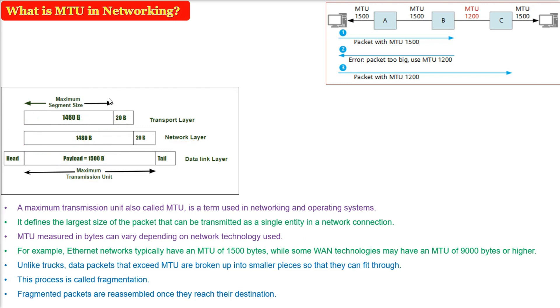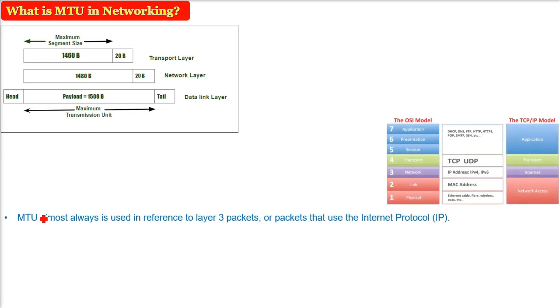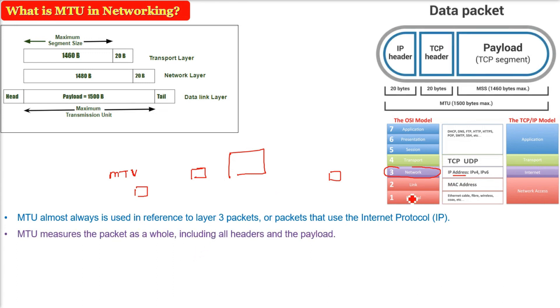Talking about the different layers, OSI layer or TCP/IP, MTU is the largest size of the content or the packet which can be sent from source to destination without any problem, passing through all the different network technologies in the network. MTU is almost always used in reference to Layer 3 packets, which is the network layer, or packets that are using the IP, which is the Internet Protocol. MTU measures the packet as a whole, not just the content. It also includes the headers.